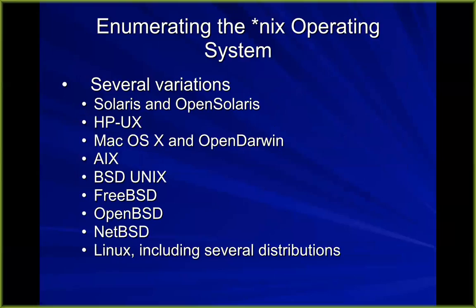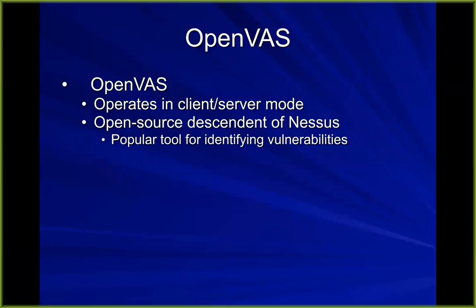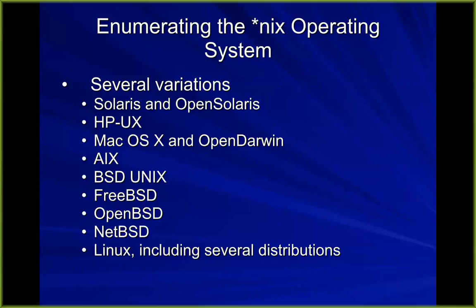OpenVAS is the open source fork of Nessus, which is very similar, and you can use it to enumerate Linux and Unix. Unix has many versions — BSD is one of the main ones from Berkeley, but there are many others like HP's commercial one and Apple's product, which is Darwin. They're all very similar; the differences between them are quite small. For all practical purposes they're all the same, but each one has a series of vulnerabilities and patches required.